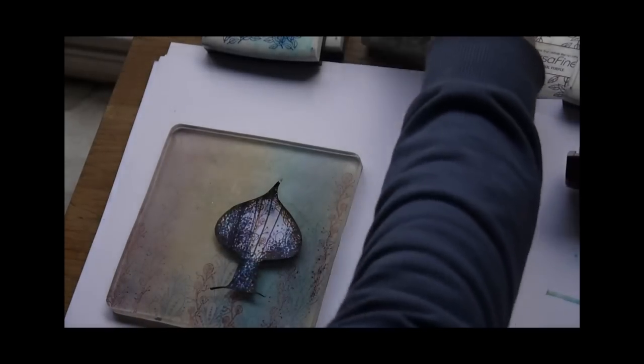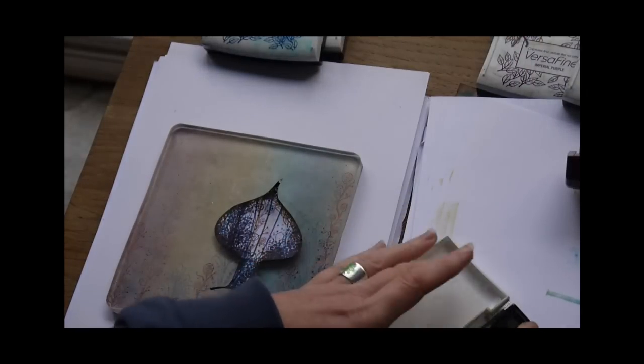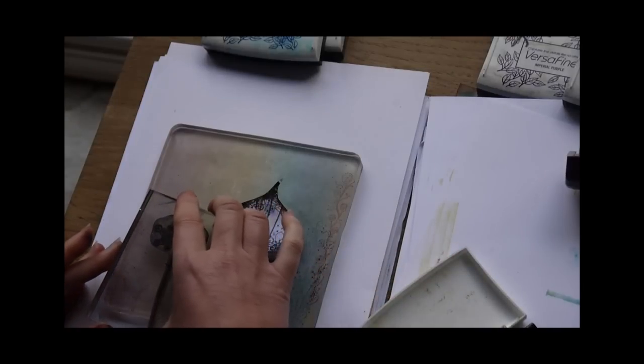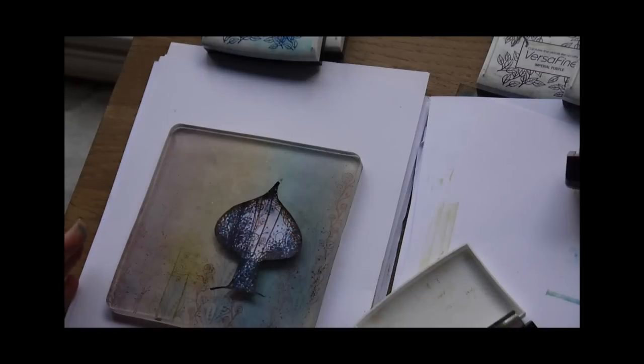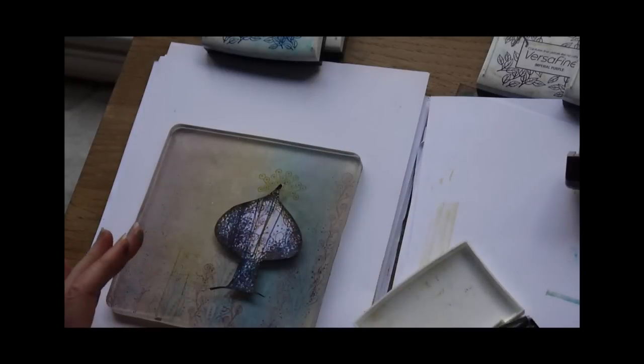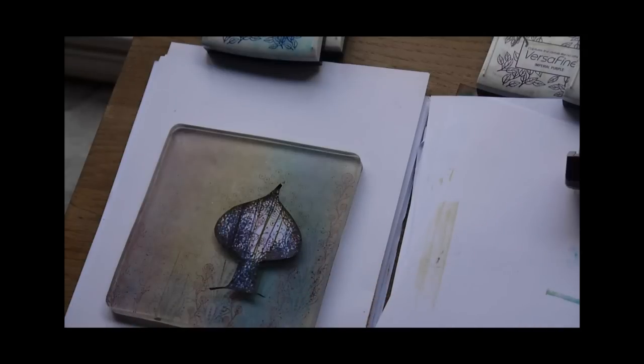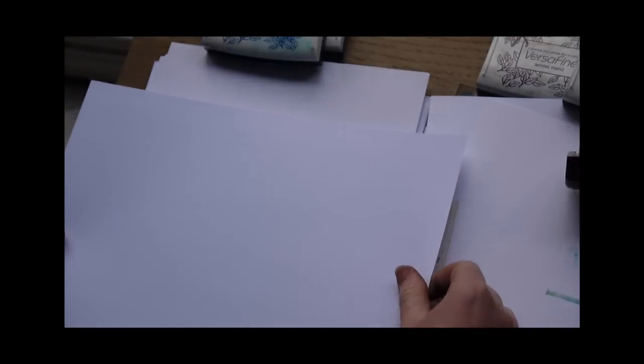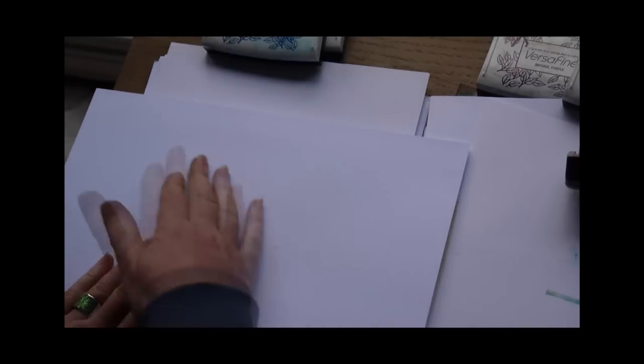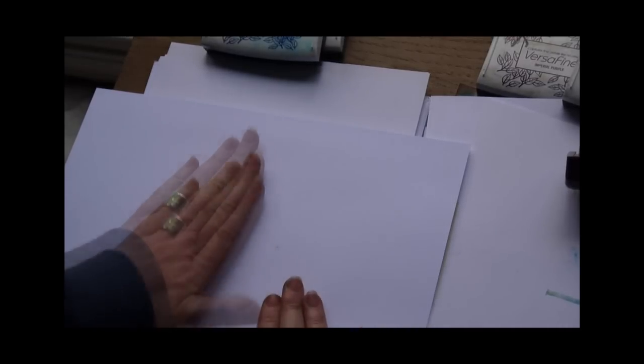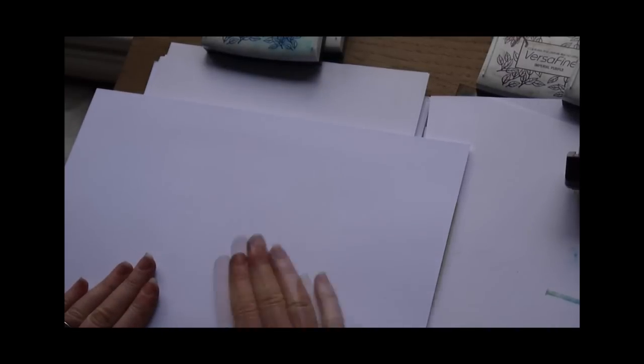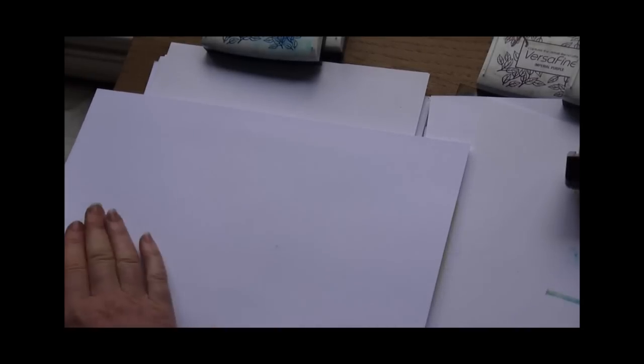And again we're going to use the Spanish moss and another Zentangle stamp. And all we're doing is building up textures, layers, colours and you'll be amazed at the results. Now I've just grabbed a smooth plain white card. Now what I'm going to do is place that down, give it a gentle rub over the top. Make sure that you've covered all the areas. And then lift off.